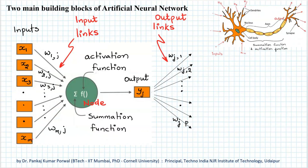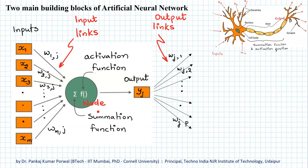In the same way, in our artificial neural network, the basic building block is our cell body and we call that a node. There are several links for receiving inputs and each of the links has a certain weight. Whatever input we are getting from other nodes is multiplied with the weight associated with the link and passed to the node.